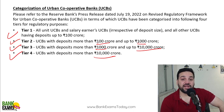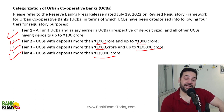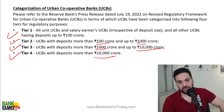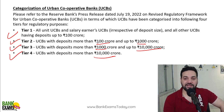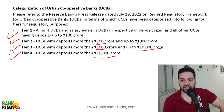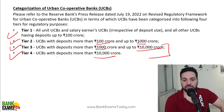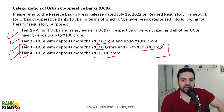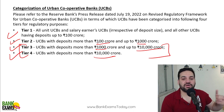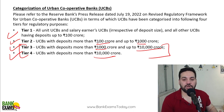Various RBI guidelines are implemented and applicable according to these tiers. For example, the guideline we are going to discuss today is applicable on Tier 3 and Tier 4 Urban Cooperative Banks only. It is not applicable to Tier 1 and Tier 2 Urban Cooperative Banks.